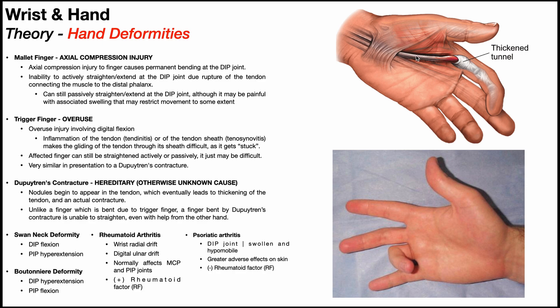You see trigger finger of the fourth digit here. There's going to be inflammation of this tendon — that would be tendonitis — or of the tendon sheath that the tendon glides through during normal movement, which would be tenosynovitis. Whether the sheath is thickened or the tendon is inflamed, it's going to make gliding of that tendon through the sheath more difficult, so the finger kind of gets stuck, usually in a flexed position.